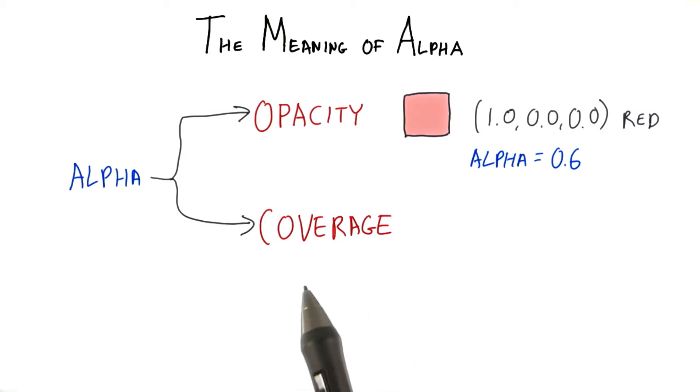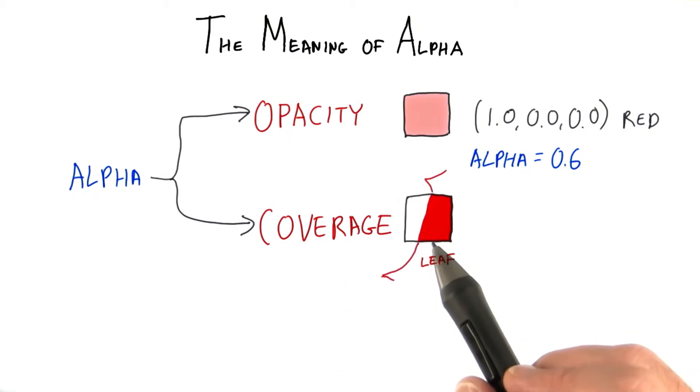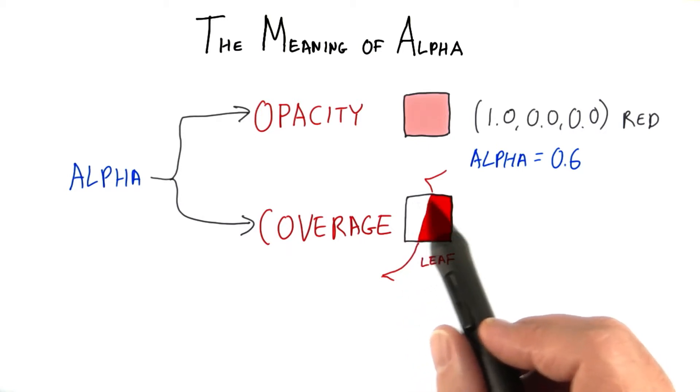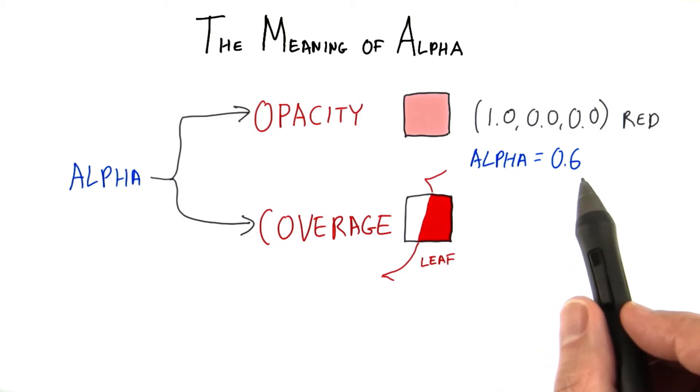However, you can get a better result by specifying an alpha between 1 and 0 for texels on the edge of a leaf. Each edge texel's alpha represents how much the leaf covers that particular texel. For example, this texel is covered by 6 tenths of the leaf, so its alpha would be 0.6.